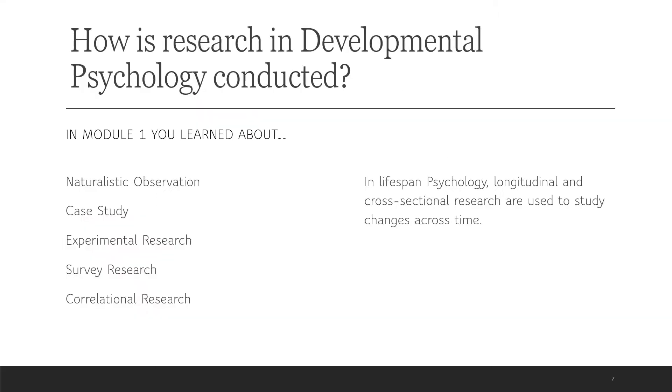So if you'll remember, in module one, you learned about the various ways that we can study behavior. You learned about naturalistic observation, case study research. Remember, case study research is where you study a rare person or a rare group of people or perhaps an unusual event.